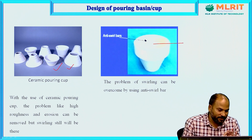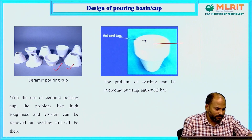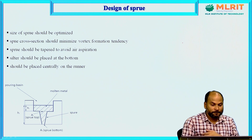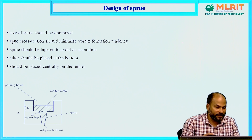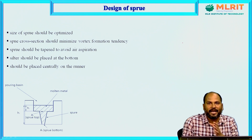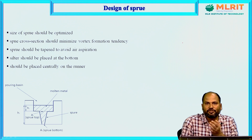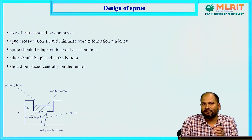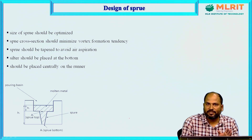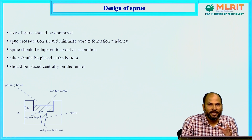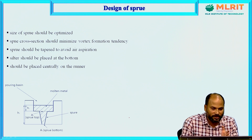Now the second part we will discuss is the design of the sprue, which is the second part of the gating system. This is very important. As noted at the start, design involves the shape, size, and placement of the element. Some key points related to the shape, size, and placement of the sprue are summarized here.